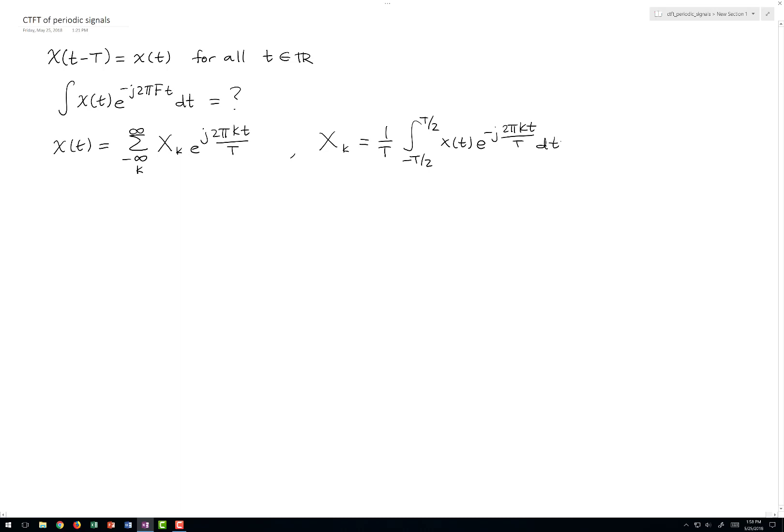It turns out that if we start with the Fourier series formula, it turns out to be very easy to calculate the Fourier transform. What we'll do is start with this formula and simply take the Fourier transform of both sides.